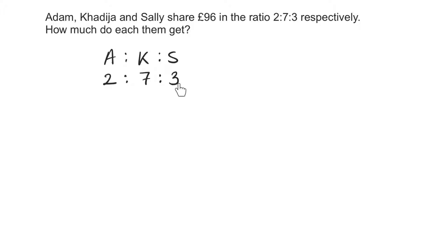The total is 12, so the denominator of each of the proportions will be 12. So, Adam is 2 out of 12. Karen is 7 over 12, 7 twelves and Sally is 3 twelves.